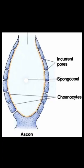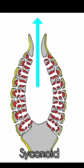The body cavity is of four types: asconoid, syconoid, leuconoid, and rhagon.